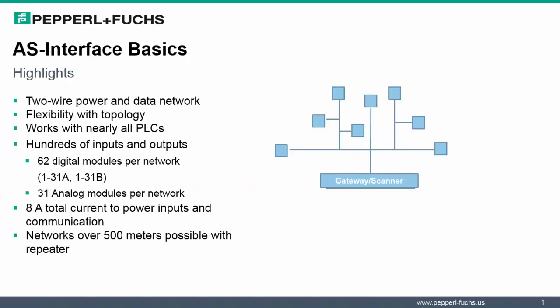While most bus systems have a steep learning curve and require specific hardware and software, AS Interface only requires a single cable to connect I/O modules from any manufacturer. The slide highlights a number of features. The topology is very flexible with AS Interface. This becomes very evident as you're setting up a network.